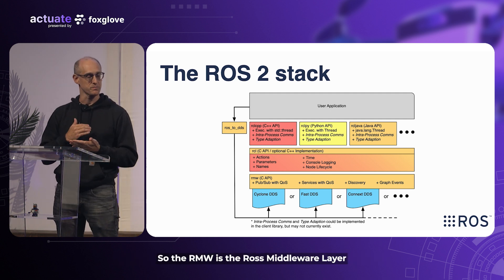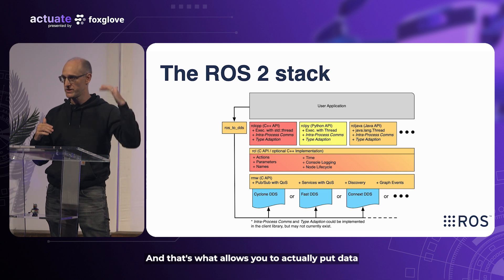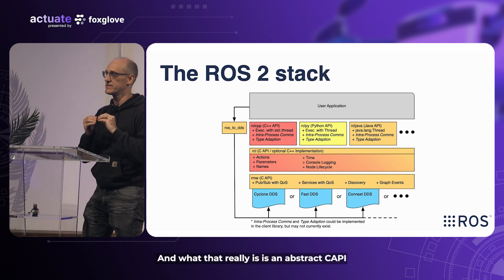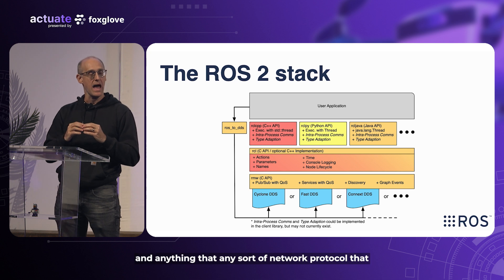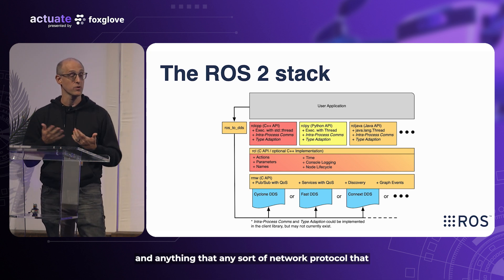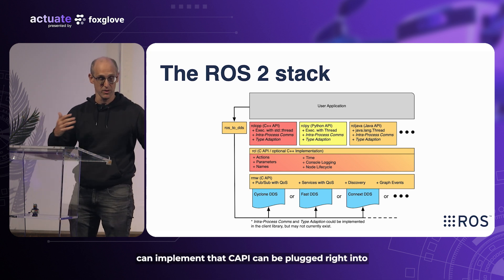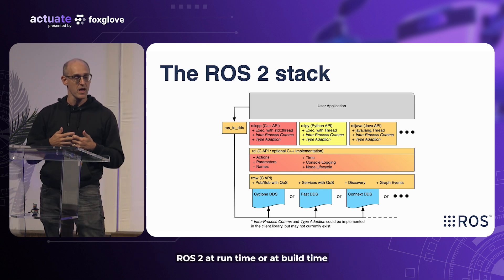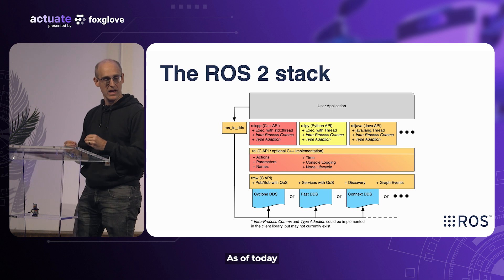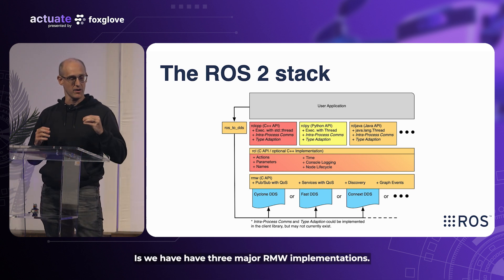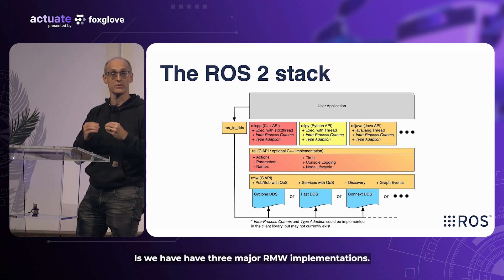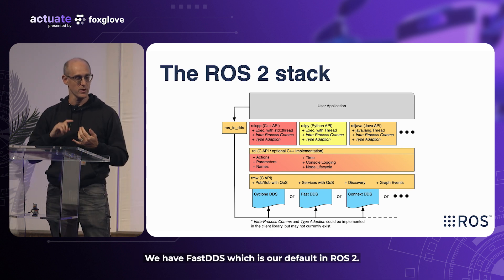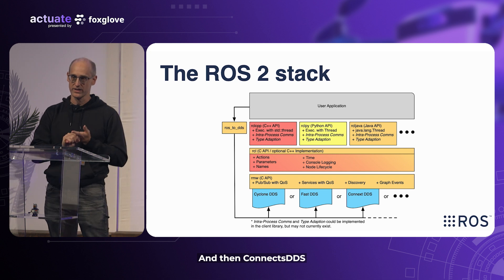The RMW is the ROS middleware layer, and that's what allows you to actually put data on the network or get data from the network. It is an abstract C API, and any network protocol that can implement that C API can be plugged right into ROS2 at runtime or at build time. As of today, we have three major RMW implementations: FastDDS, which is our default in ROS2; CycloneDDS; and ConnextDDS.